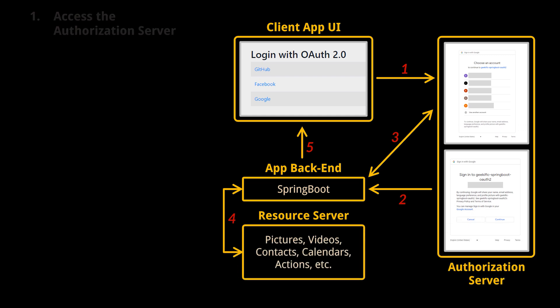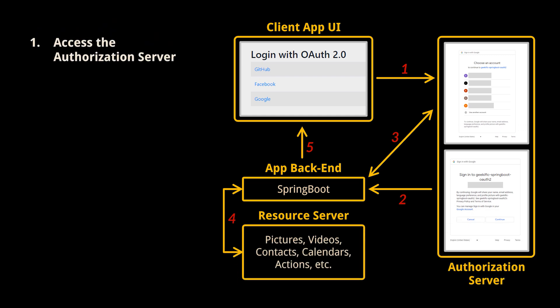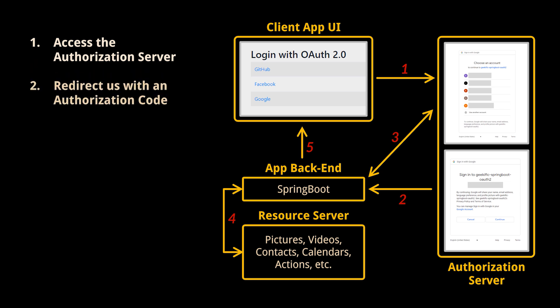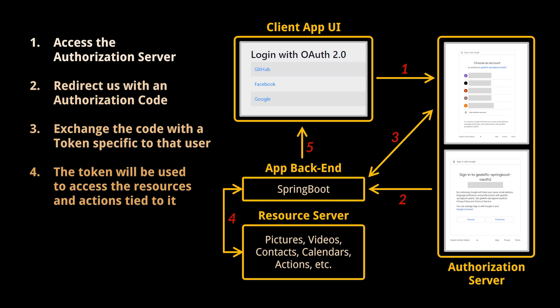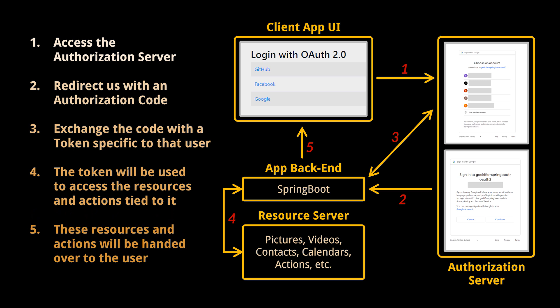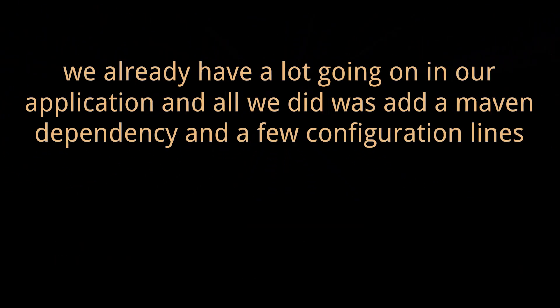As a small representation of what is happening behind the scenes, consider the flow diagram. The first step is accessing Google's authorization server, which grants our application an authorization code unique to it. This code can be exchanged for a token specific to that user. That token is then used to access the specific resources and actions tied to it, and finally these resources and actions are handed over to the user — ranging from simply logging in, to browsing, to applying changes, editing the application, or invoking certain endpoints.